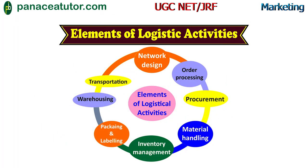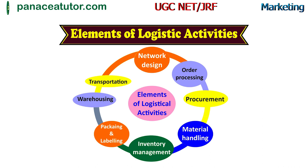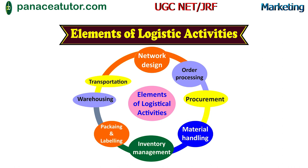Now we will discuss the elements of logistic activities. The first element is warehousing — the place where all materials are going to be stored. A shelter is provided for raw materials so that whenever you need them, they are easily available. The next element is inventory management — where there is a specific load with identification so we can easily identify and manage inventory properly.